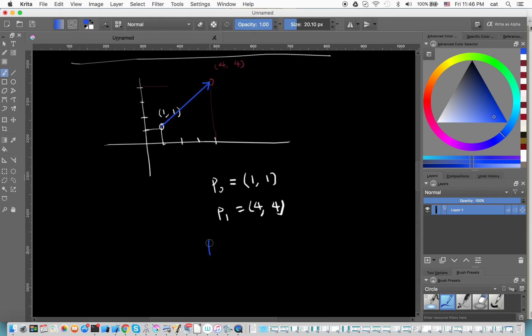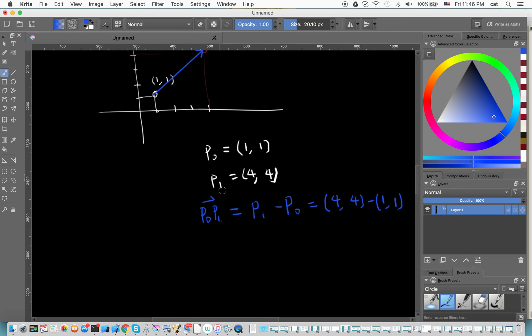So how can we compute a vector from P₀ at (1,1) to (4,4)? What we can do is: vector from P₀ to P₁ is equal to P₁ subtract P₀. So you do it in the opposite side - use P₁ subtract P₀. So you have (4,4) subtract (1,1), so that's equal to (3,3).